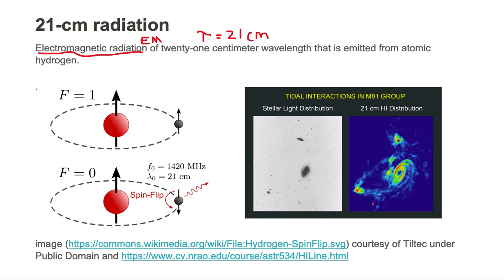In the falsely colored radio image on the right, blue indicates no 21 centimeter neutral hydrogen distribution, whereas the yellows and the reds indicate significant amounts of 21 centimeter hydrogen distribution.